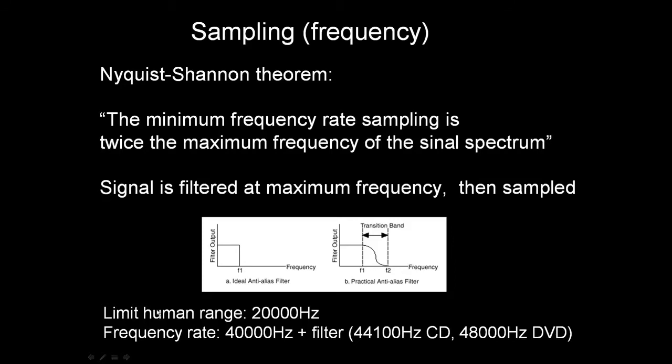Because the limit of human range is 20,000 Hz, we should take 40,000 Hz. But this would bend the spectrum down over 20,000 Hz. High frequencies will be moved down. To avoid this issue, we use an anti-aliasing filter, which rejects all frequencies above 20,000 Hz before sampling.